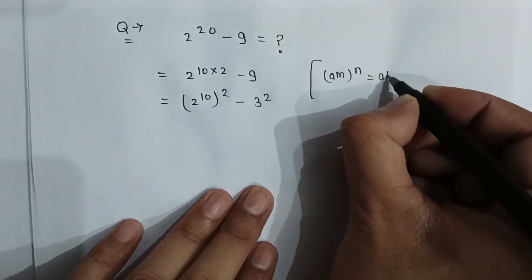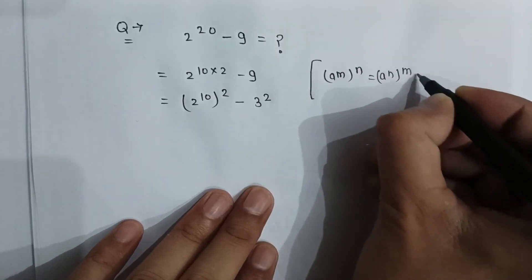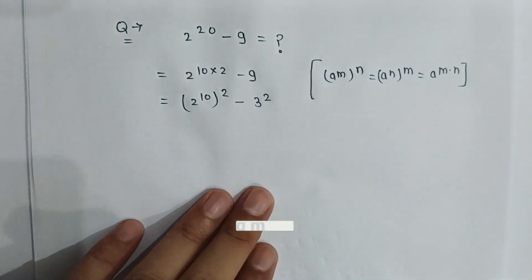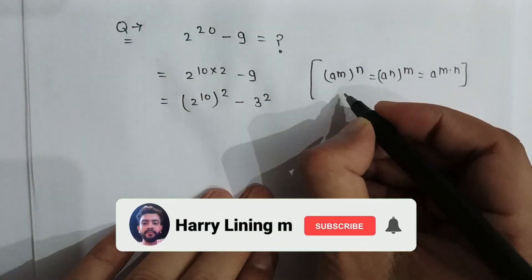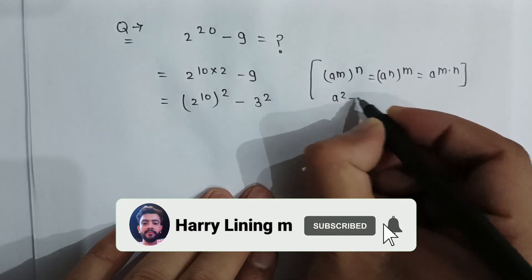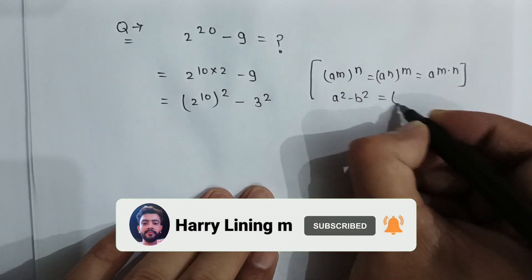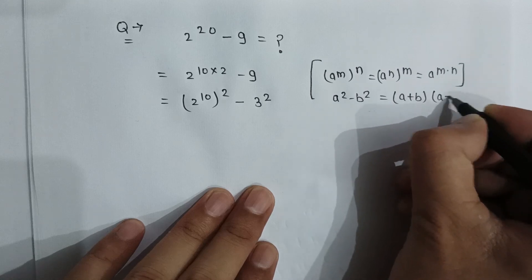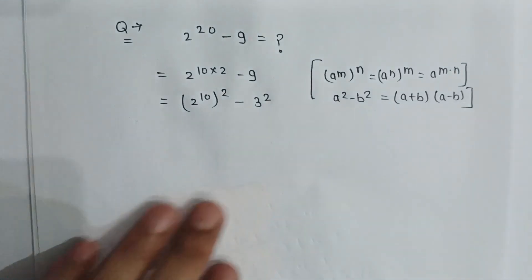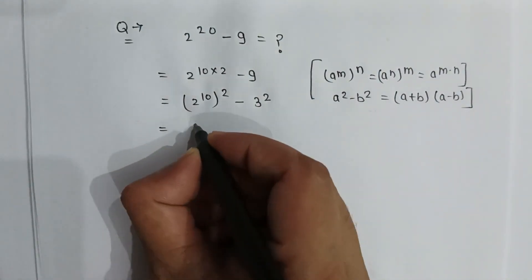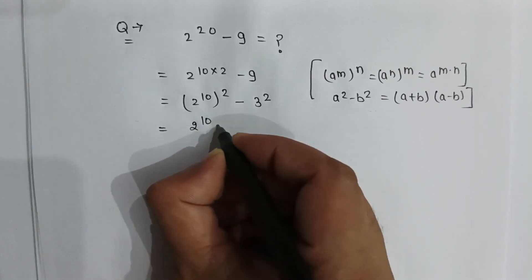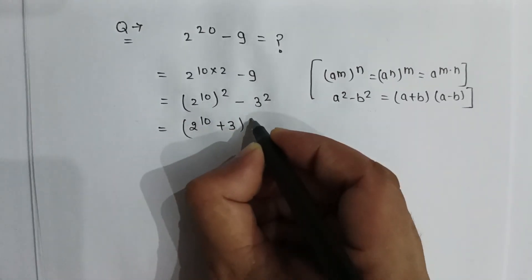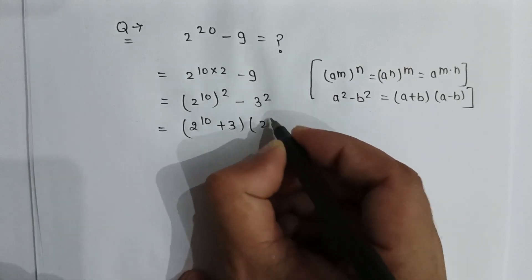Because we know that a to the power m multiplied by n is equal to a to the power m, whole power n. And as we know that a squared minus b squared can be written as (a plus b)(a minus b). So it will be (2 to the power 10 plus 3) multiplied by (2 to the power 10 minus 3).